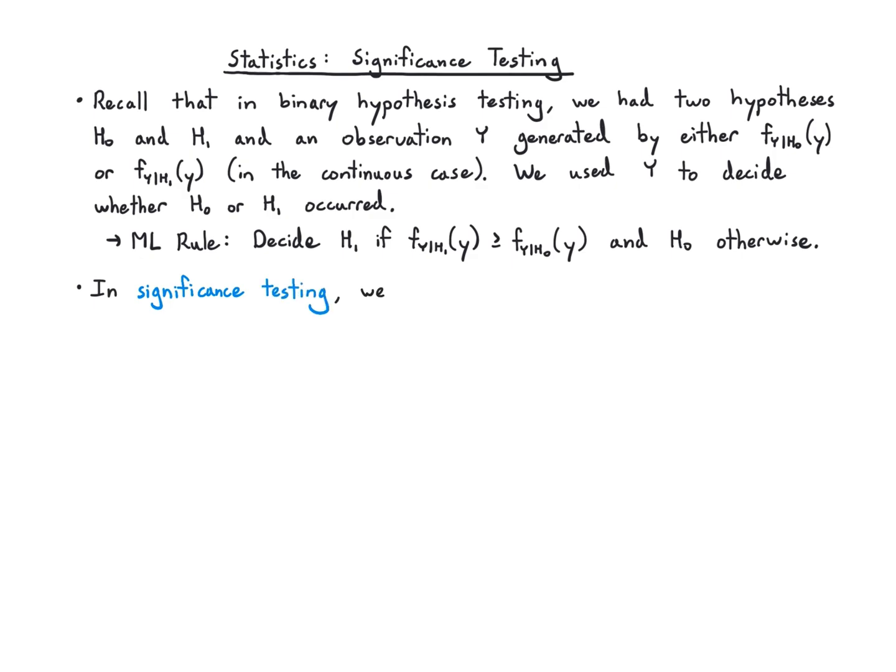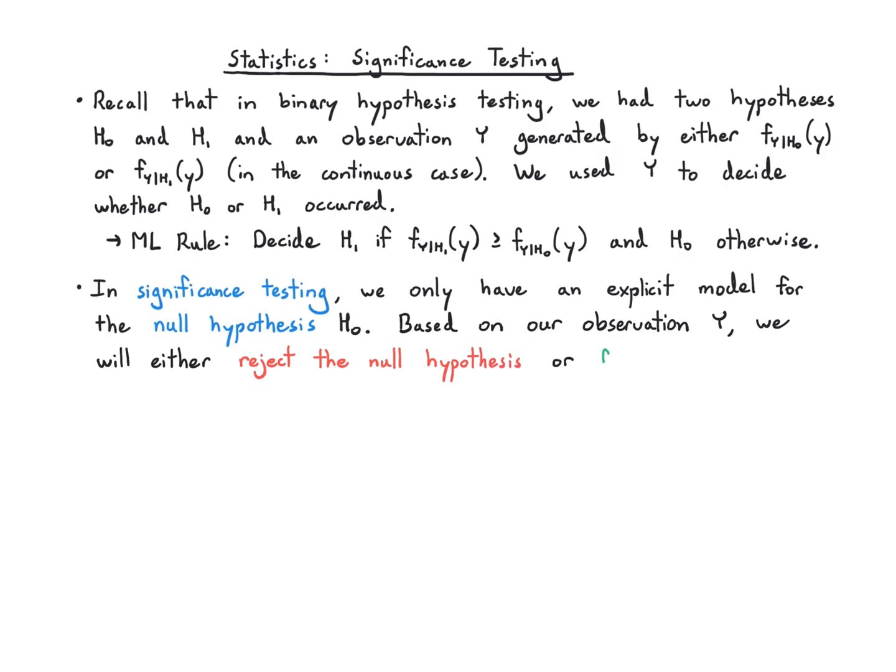In significance testing, it's a bit different. We only have an explicit probability model for the null hypothesis H0, not for the alternate. Based on our observation Y, we can only decide whether to reject the null hypothesis or fail to reject the null hypothesis.